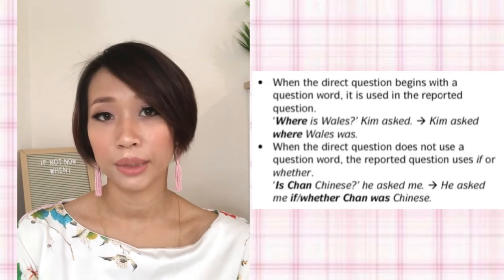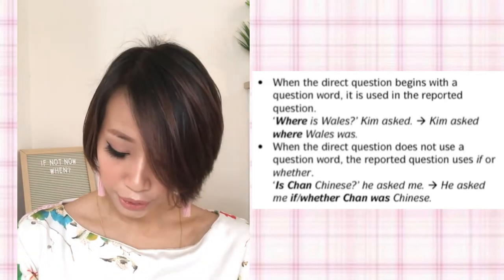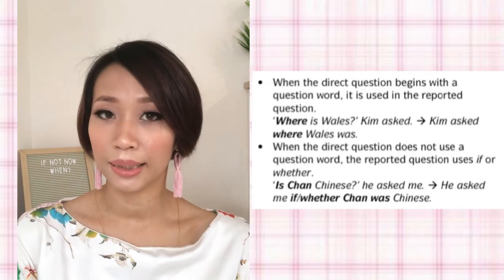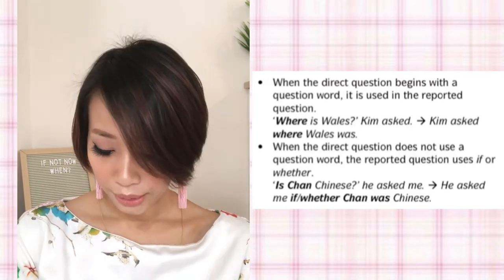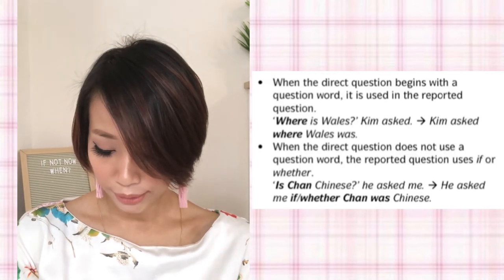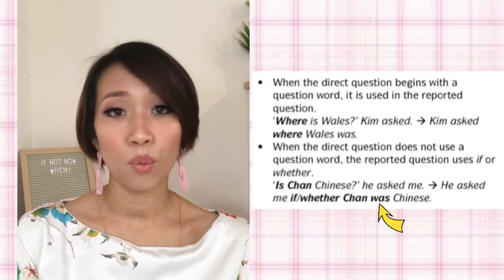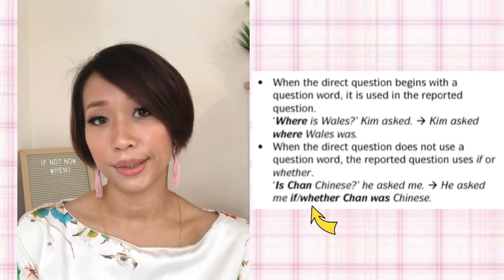Jika atau sama ada. For example, 'Is Chan Chinese?' He asked me. Adakah Chan berbangsa Cina? Dia tanya saya. Reported question dia adalah: he asked me if or whether Chan was Chinese. So is, tukar jadi was, dan kita guna if atau whether.